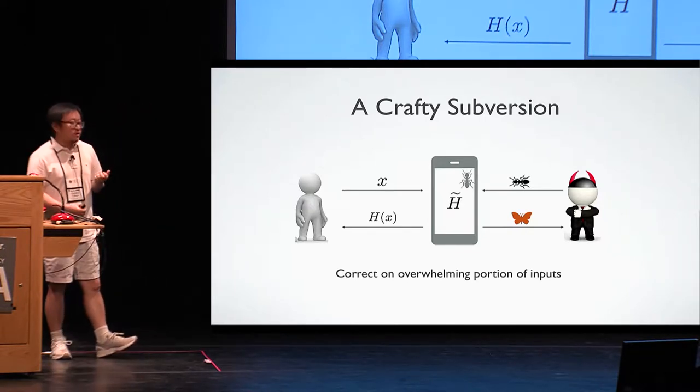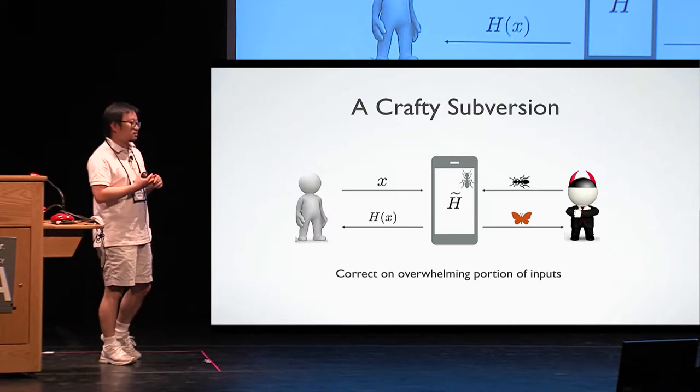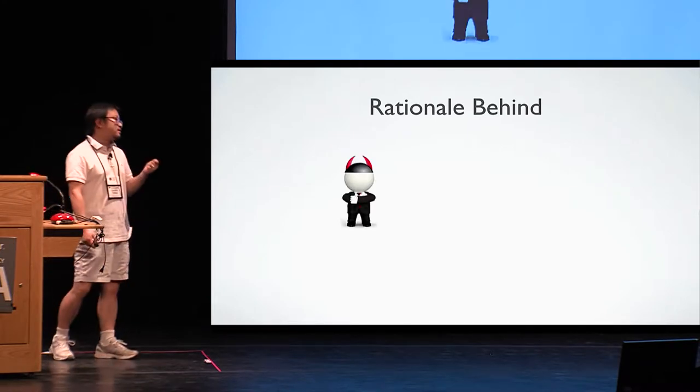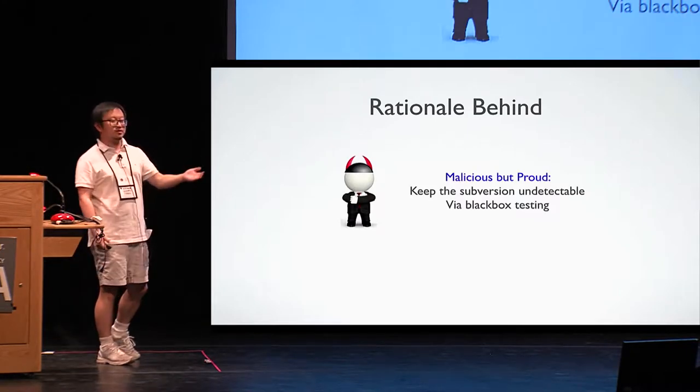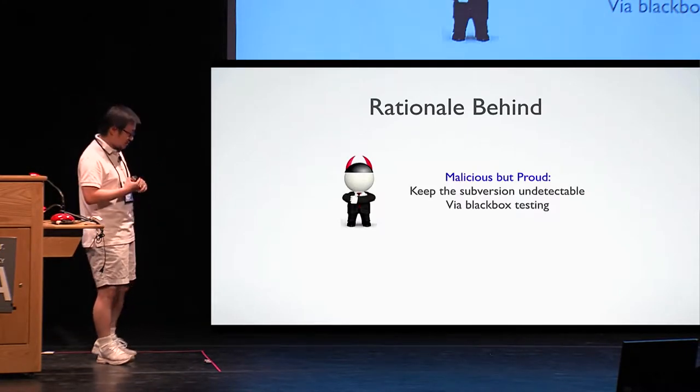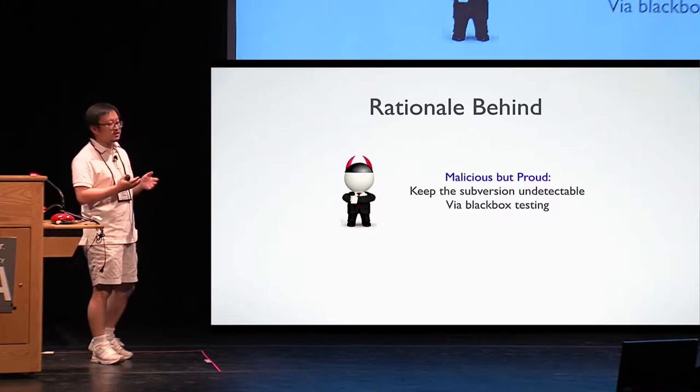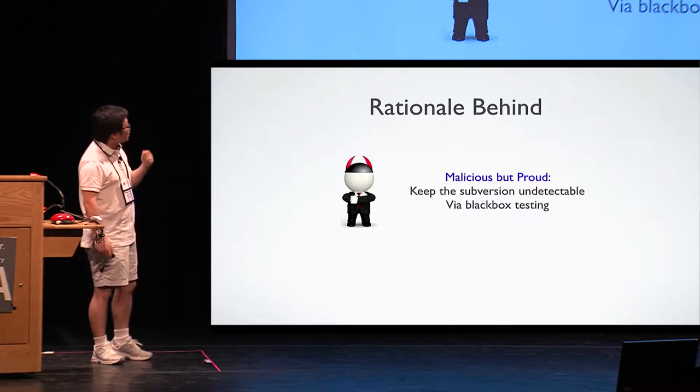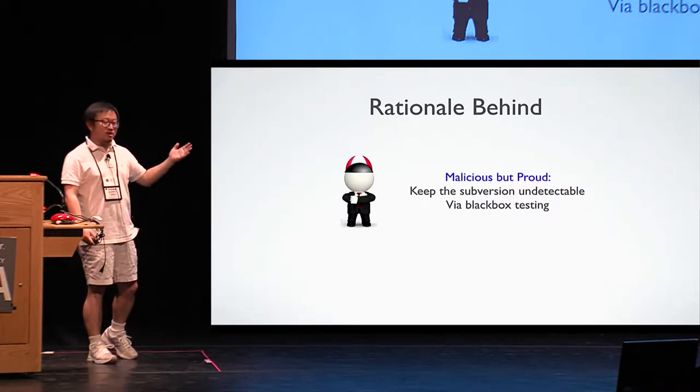So the implementation is actually correct on overwhelming portion of inputs. So in this way, no one can detect such subversion by black box testing. Some of you might wonder, is this simple attack really reasonable? So first, the attacker prefers to keep the subversion undetectable. That's easily understandable because if easily noticeable, then the user simply discards the implementation.